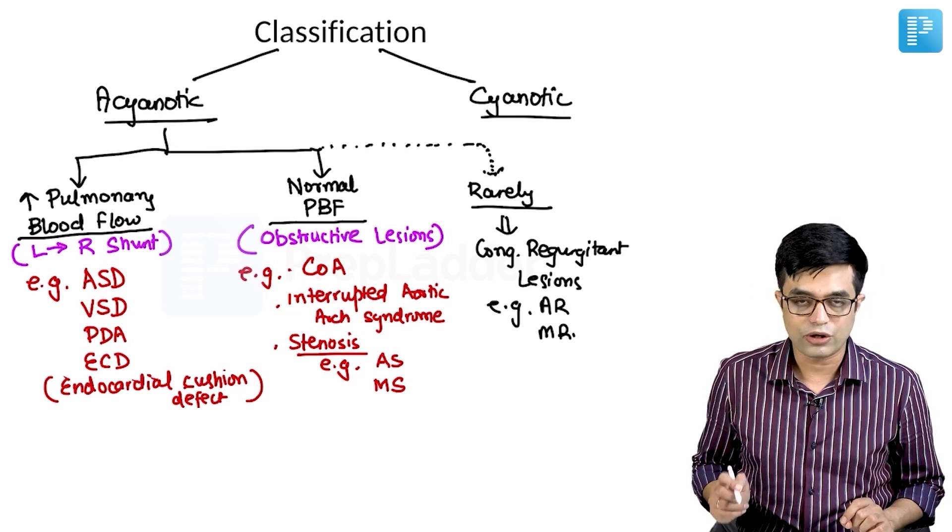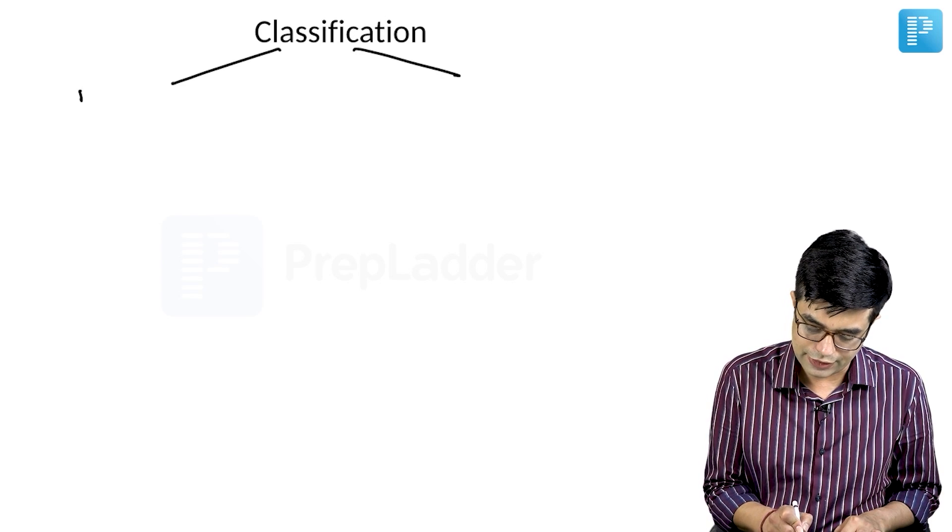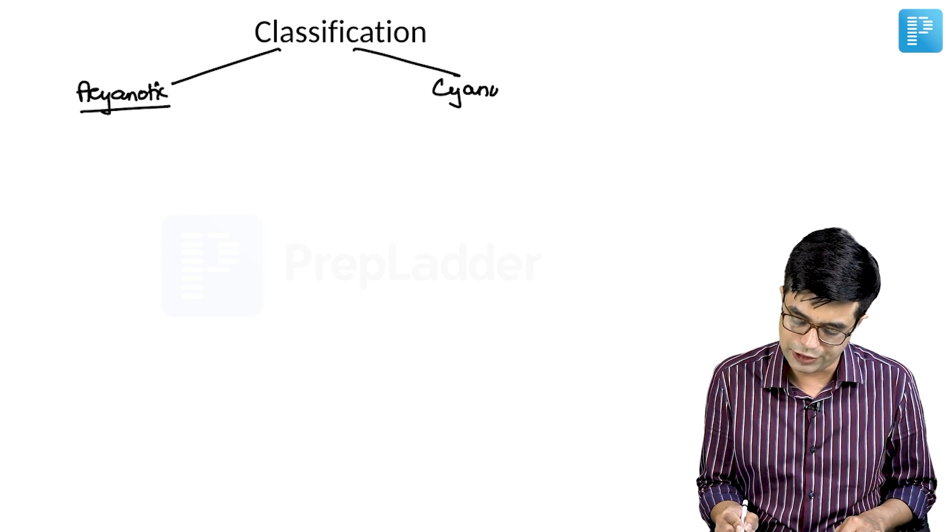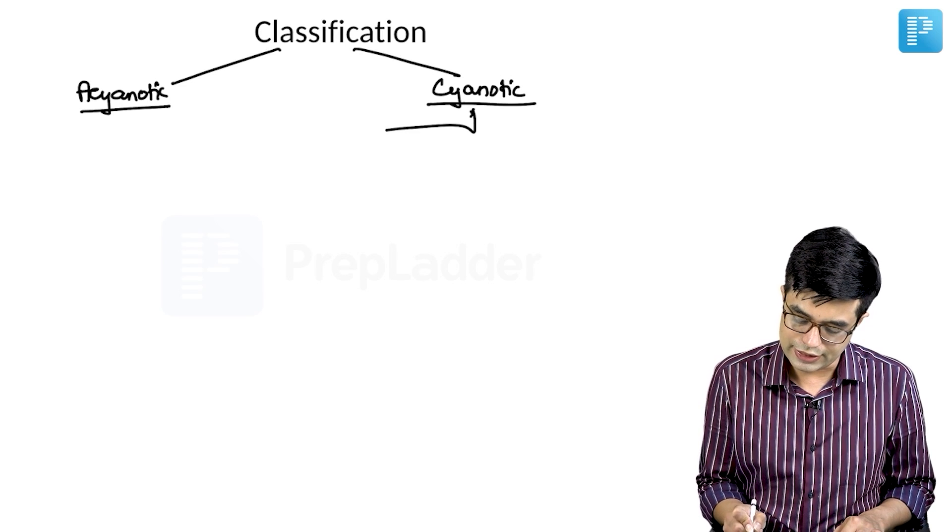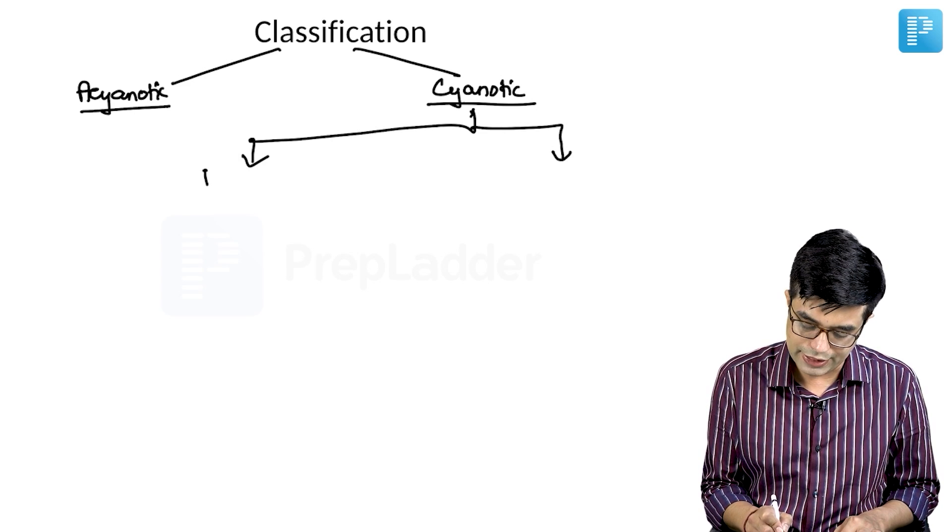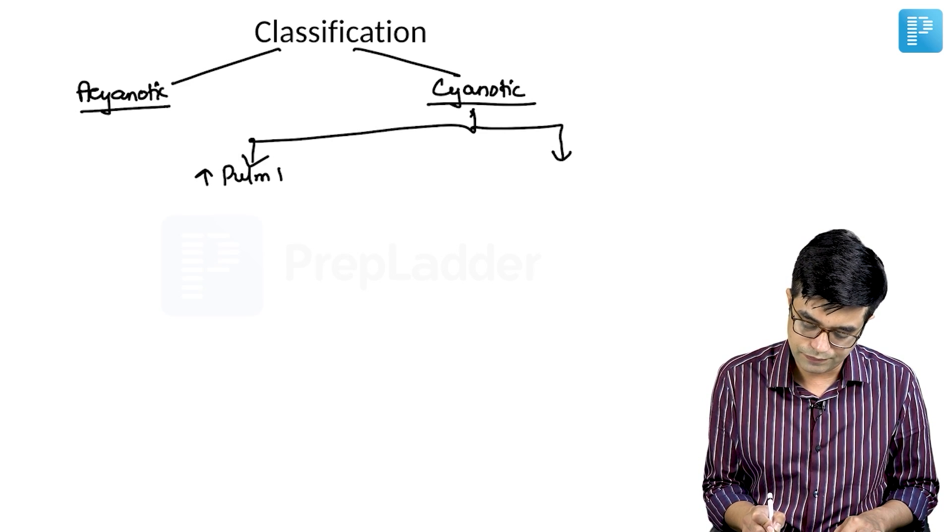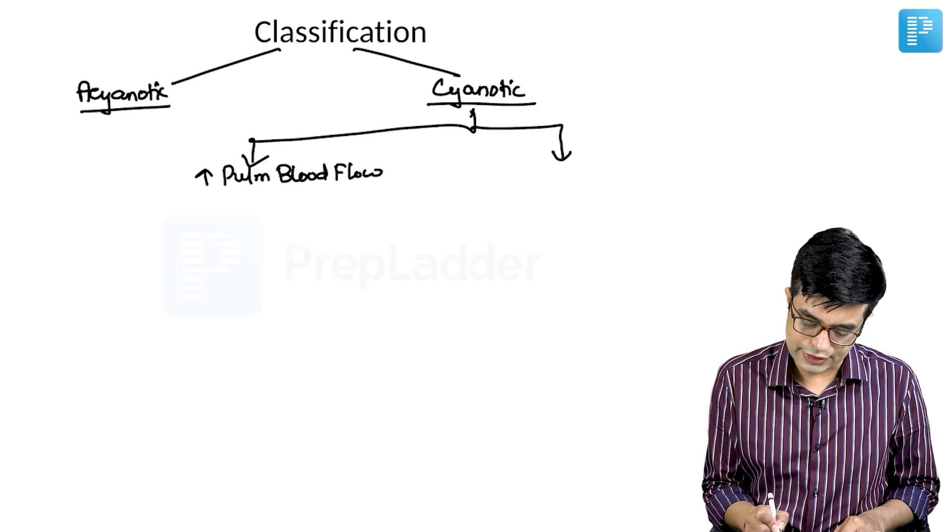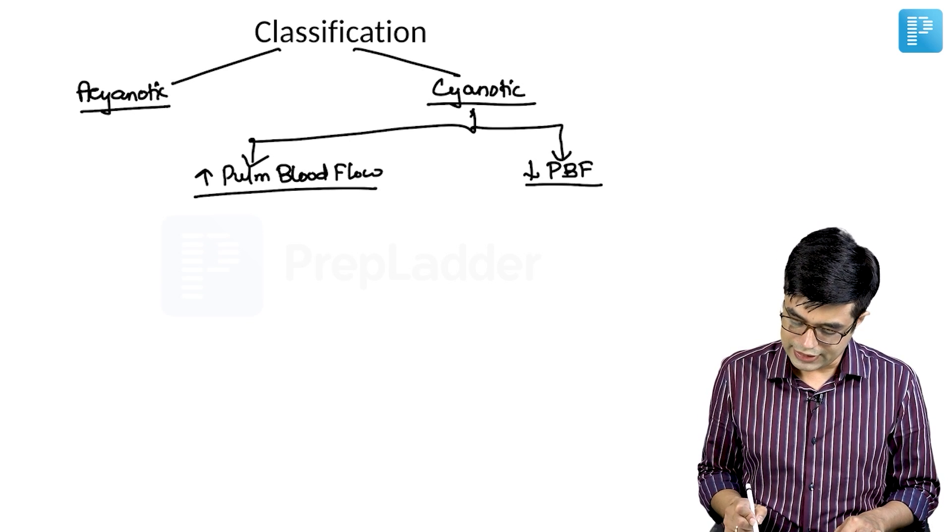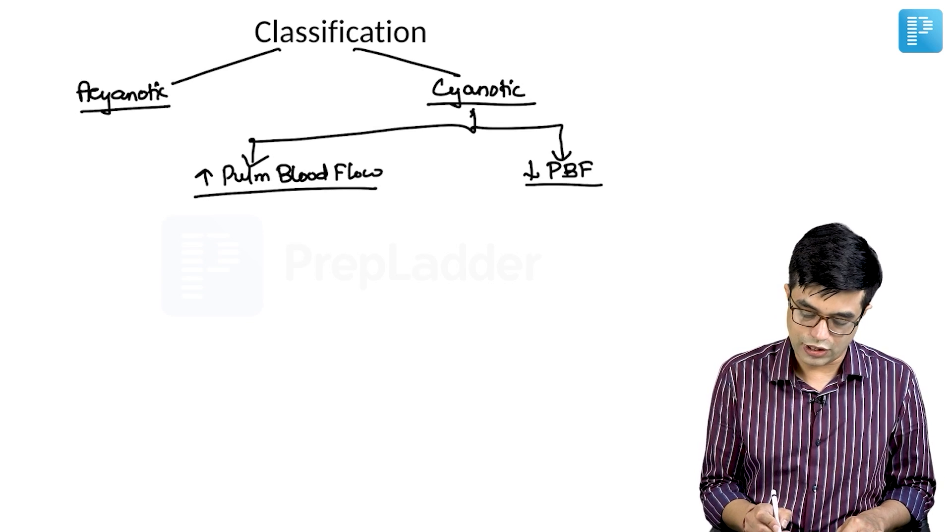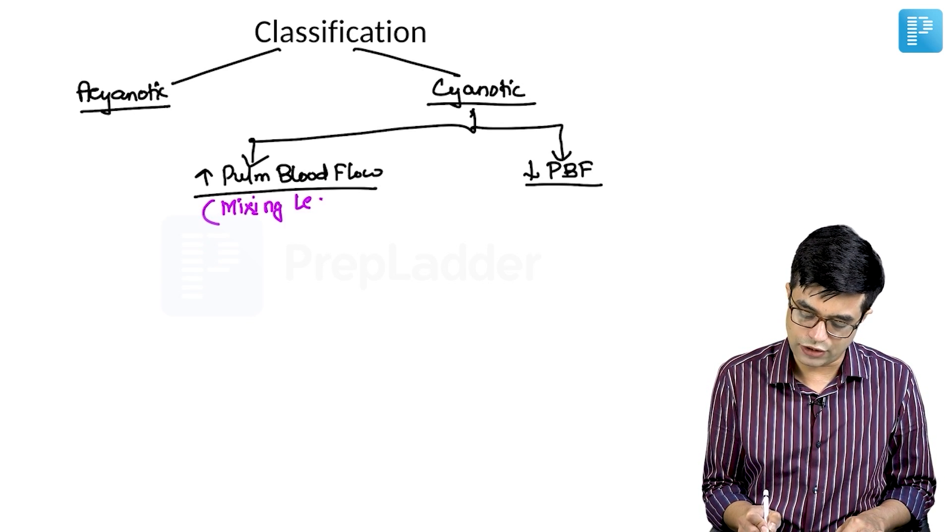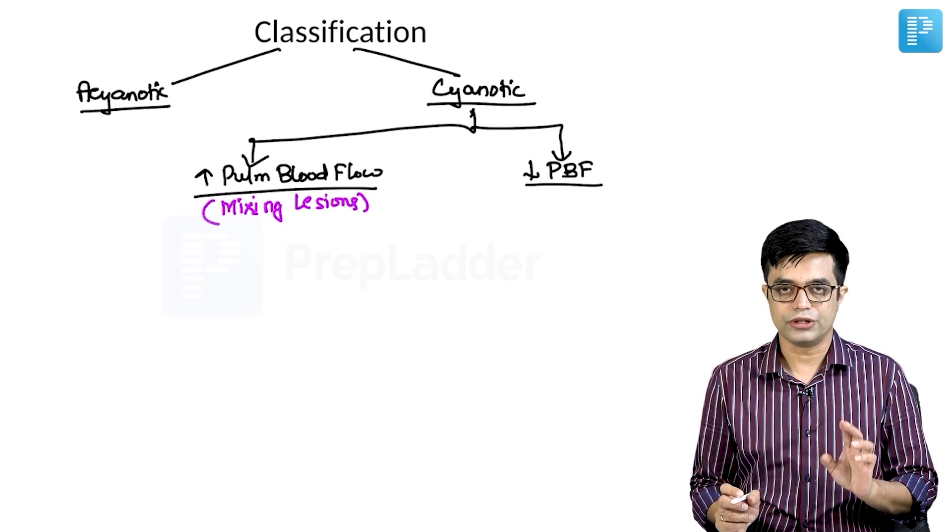Moving over to the cyanotic diseases. As I have told you, we have acyanotic and cyanotic. Acyanotic already discussed, so our focus now will be on cyanotic diseases. Cyanotic diseases again can be classified into two groups based upon pulmonary blood flow. Here, there can be increased pulmonary blood flow and cyanotic diseases with decreased pulmonary blood flow. Cyanotic diseases with increased pulmonary blood flow are also called mixing lesions because they will have mixing of the arterial and venous blood in some way or the other.